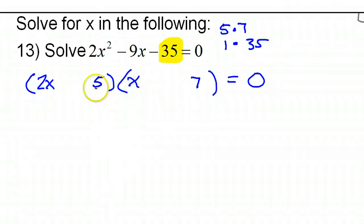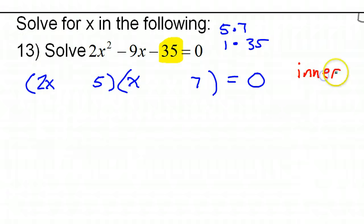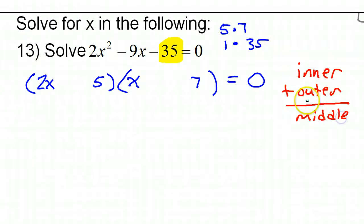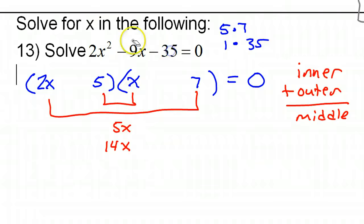Here's the key: inner plus outer must equal the middle. That's so important, let me write that down. Inner plus outer should equal the middle. So this is the inner and this is the outer. Inner, I have 5x. Outer, I have 14x. And somehow this has got to give me the middle of negative 9x.